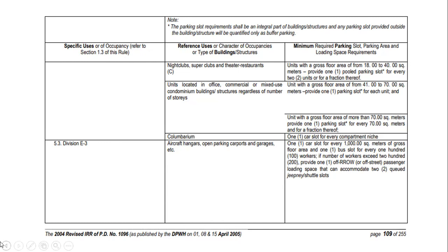For condominium buildings, the general requirement is one parking slot per unit. For columbarium, one car slot per compartment. For aircraft hangars, one car slot for every 1,000 square meters of gross floor area, and one bus lot for every 100 workers. If the number of workers exceeds 200, provide one off-road right-of-way or off-street passenger loading space accommodating two queued shuttle slots.